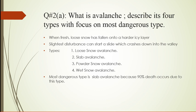The first point is the definition of Avalanche. When fresh loose snow has fallen onto a harder ice layer, it causes an avalanche. Second definition: the slightest disturbance can start a slide which crashes down into a valley. Now we will talk about types.